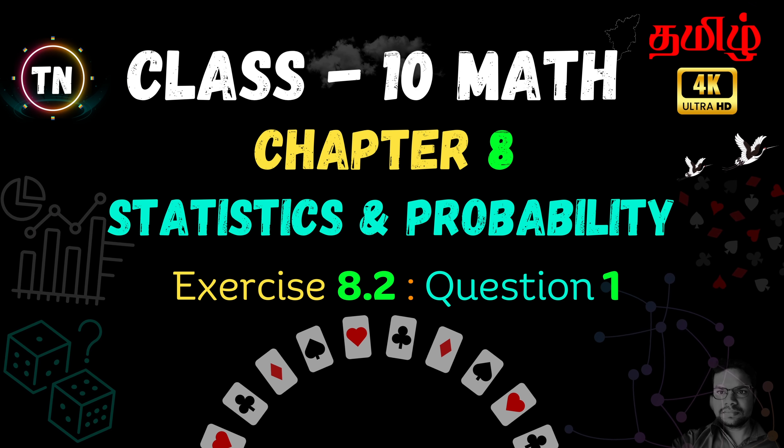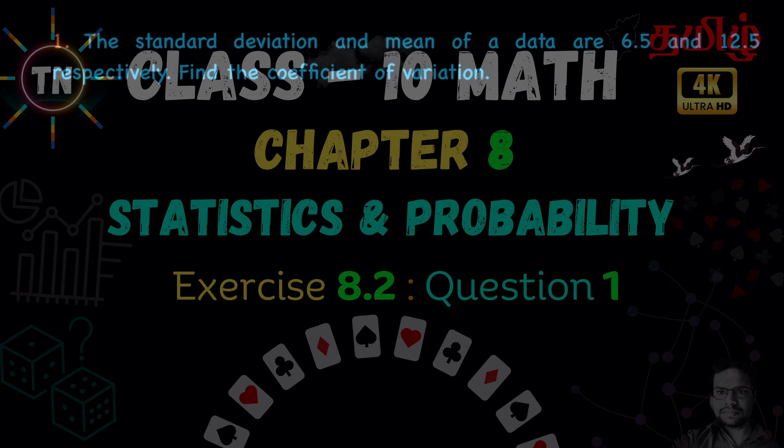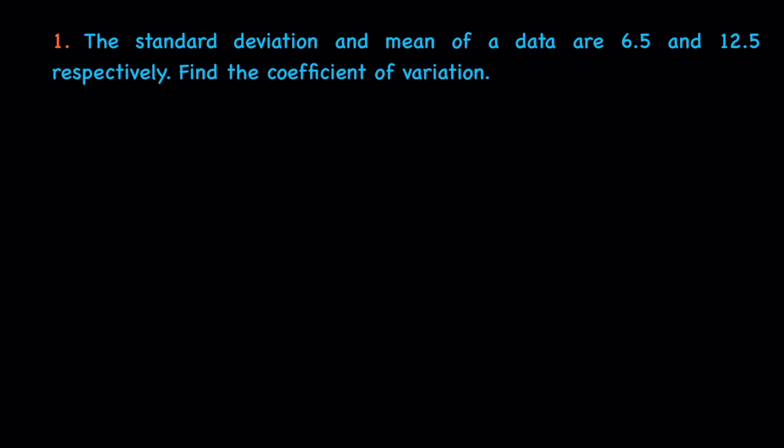Exercise 8.2, question number 1. The standard deviation and mean of a data are 6.5 and 12.5 respectively. Find the coefficient of variation.